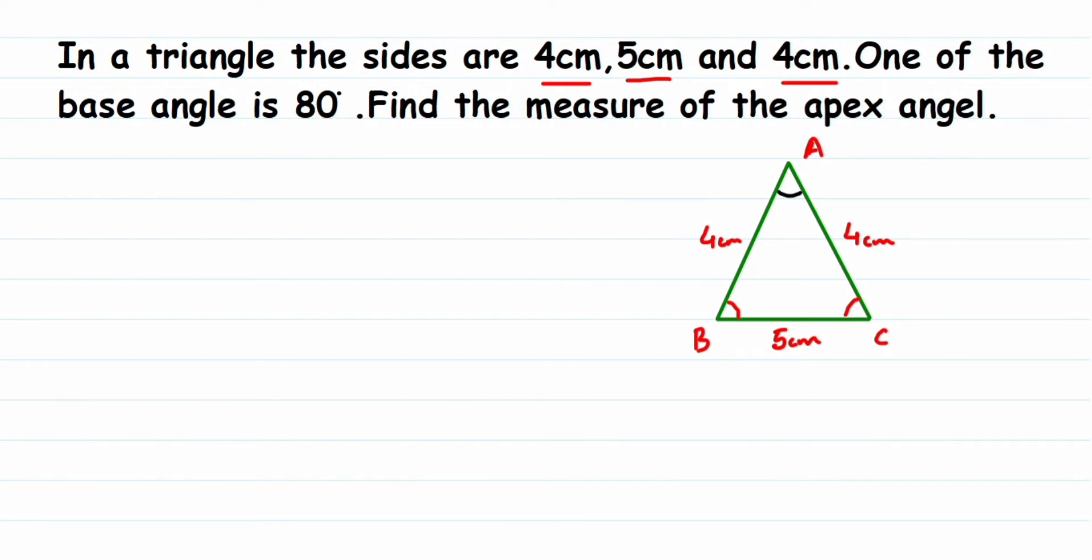angles is 80 degrees, it means both base angles will be 80 degrees because base angles are equal. So from there I can write down angle B is 80 degrees and also angle C is 80 degrees. They are asking us to find out the apex angle, which is this third angle which we have to find out.